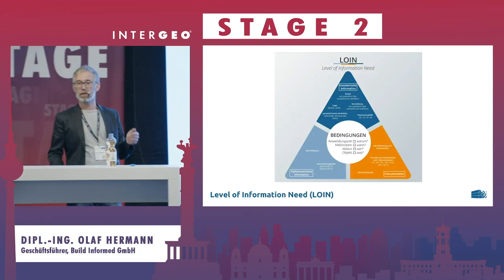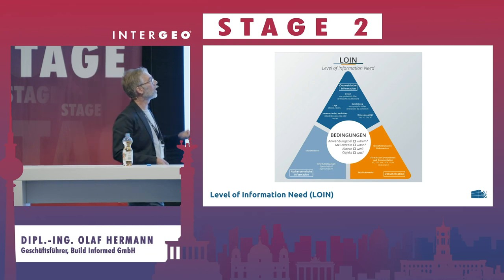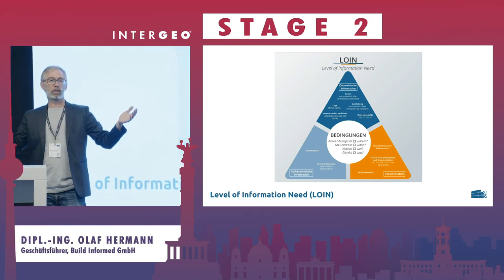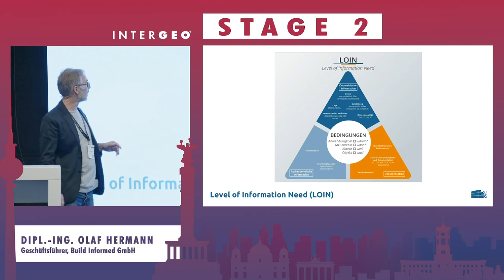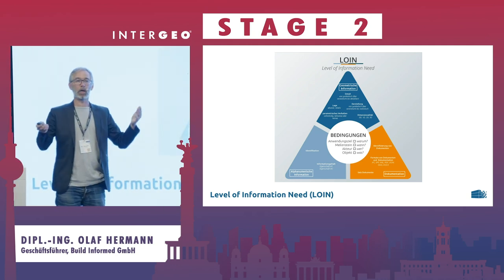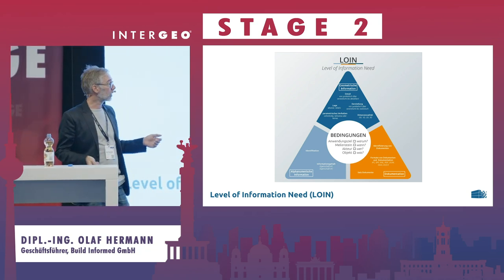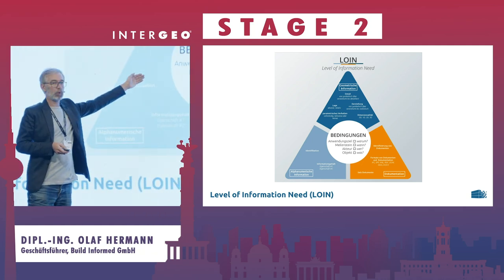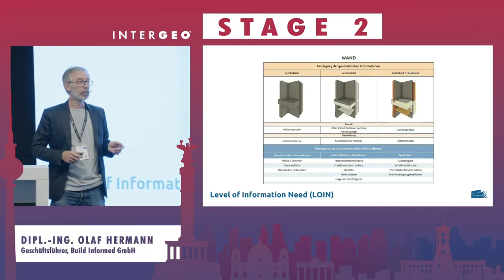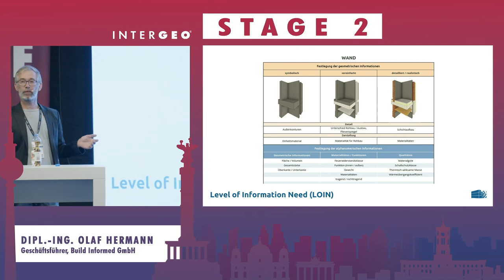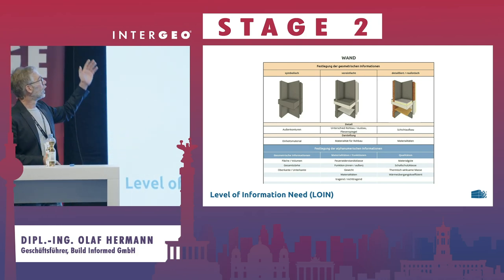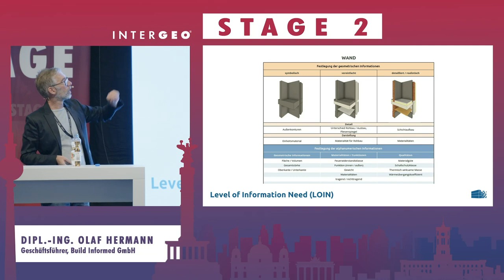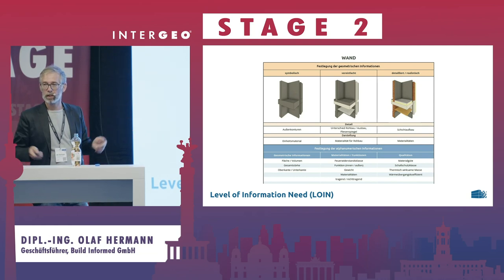We're talking about the level of information need — what should be in the model. To explain this I have a slide. It's in German but I'll explain it. On one hand there is geometrical information — we have to discuss, for example, how a door looks, which details are inside. Another thing is the alphanumeric information: which parameters and attributes I want in the model, and for what. And at the end, in which format I deliver the model, and very importantly, why I'm doing this — the Anwendungsziel. So we have our own LOIN for every project. We bring this to the table, take the customer with us, and ask what they need. Let's talk about all this geometric and alphanumeric information. It takes some time, but it's really necessary.